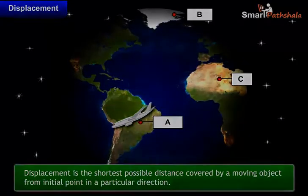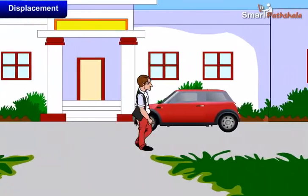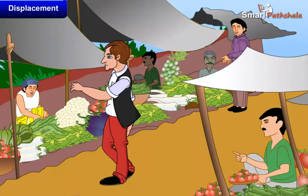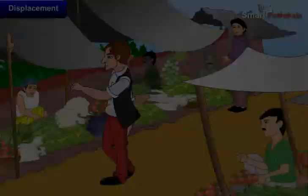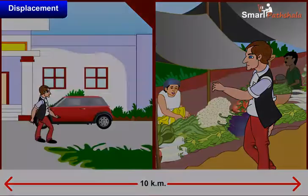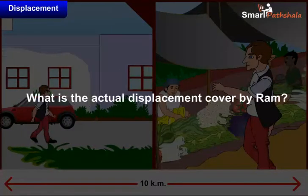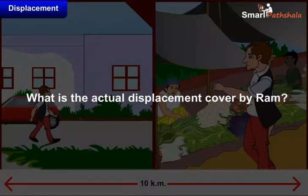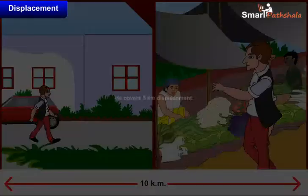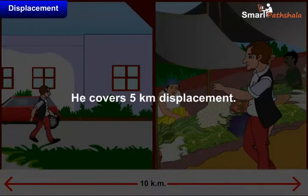For example, suppose Ram goes to the market to buy vegetables and the market is 10 km away from his house. After buying vegetables, he stops halfway along the path. So, what is the actual displacement covered by Ram? In this case, the final position is between the halfway point and the initial position from his house, so he covers 5 km displacement.